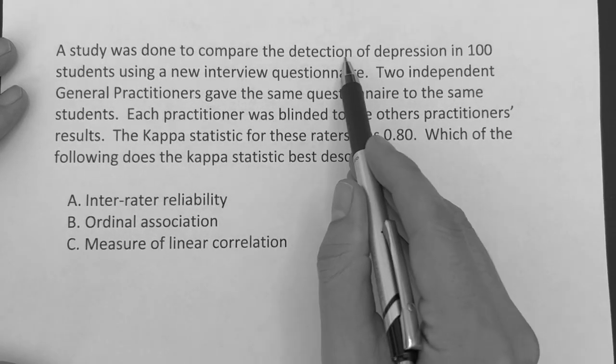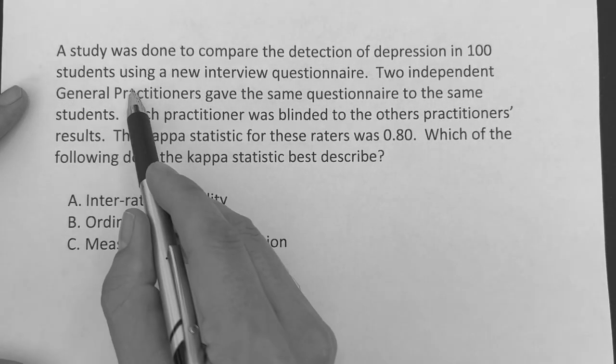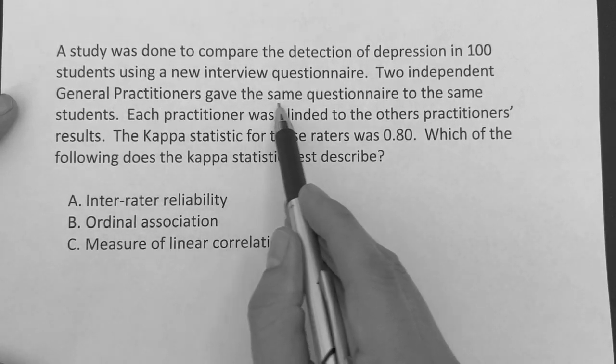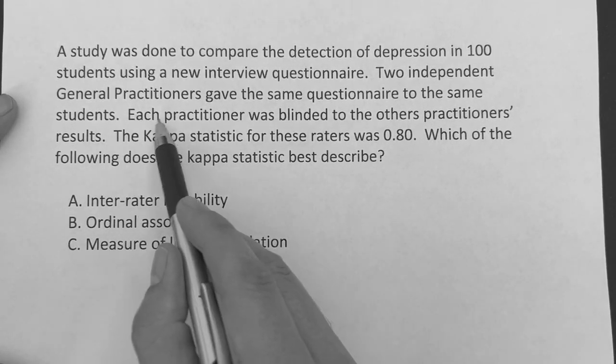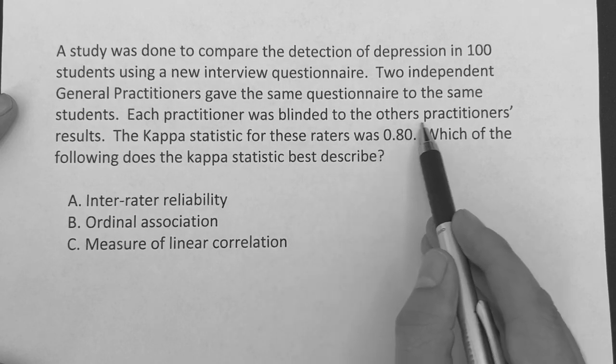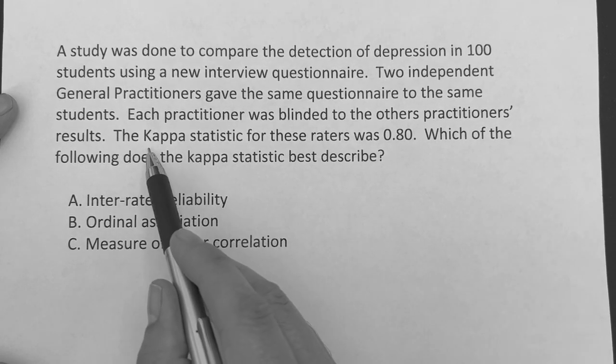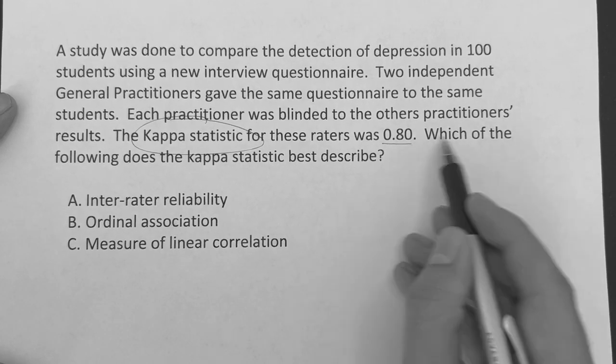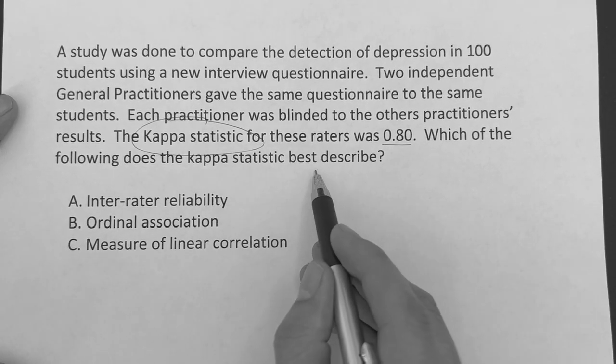All right guys, it says a study was done to compare the detection of depression in 100 students using a new interview questionnaire. Two independent general practitioners gave the same questionnaire to the same students. Each practitioner was blinded to the other practitioner's results. The kappa statistic for these raters was 0.80. Which of the following does the kappa statistic best describe?